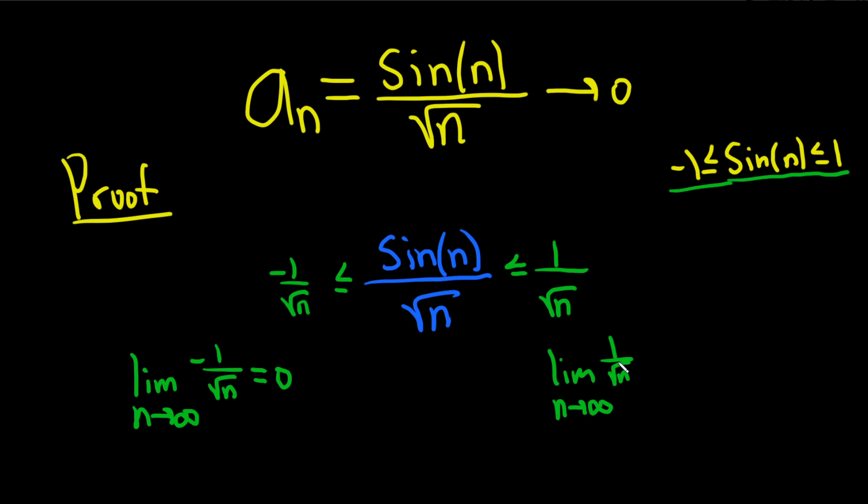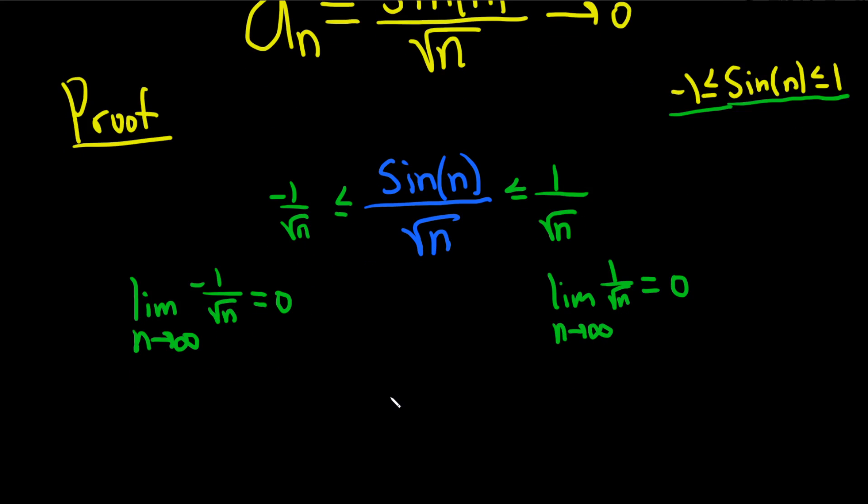Limit as n approaches infinity of -1/sqrt(n): same thing, n is getting really big, this fraction gets small, so this also approaches zero. This is trapped in the middle, so therefore this also approaches zero by the squeeze theorem.